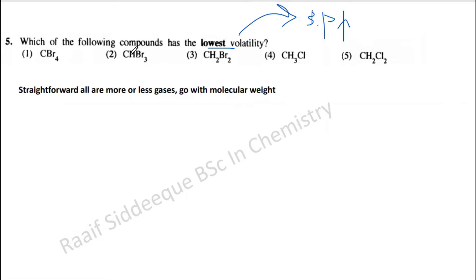CBr₄ and CH₂Br₂ can sometimes be liquids, but still the interactions are more or less similar because these are like a homologous series — CH is replaced by chlorine, and chlorine is replaced by bromine. So when you consider these molecules, you can directly go with the molecular weight.